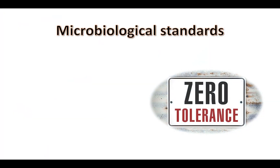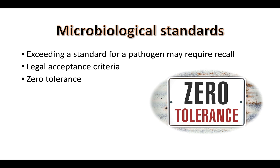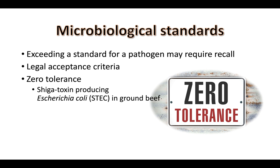Microbiological standards in the United States are established by the FDA and USDA for specific high-risk food types. Exceeding an FDA or USDA microbiological standard will require a recall — these are essentially the legal acceptance criteria for your product to enter commerce in the United States. Many of these microbiological standards are zero tolerance for pathogens. Examples include shiga toxin-producing E. coli in beef and any pathogen in a ready-to-eat food.